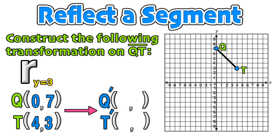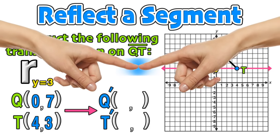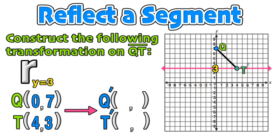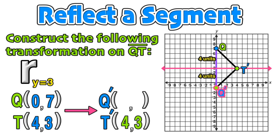Now we can reflect line segment Q'T' over the line of symmetry y equals 3, a horizontal line equation. Notice that point T is directly on the line of symmetry — just like pressing your finger up to a mirror and having it appear that another hand is directly touching it, a point directly on the line of symmetry stays on the line of symmetry. So T' will have the same coordinates as T at (4, 3). For the other endpoint Q, we count 4 units from the line of symmetry, repeat that distance on the other side — another 4 units — and plot Q'. We then construct line segment Q'T' and identify Q' at coordinates (0, negative 1).